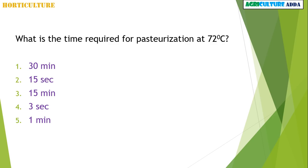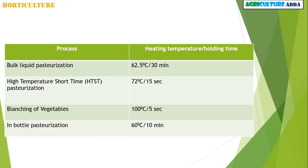What is the time required for pasteurization at 72 degrees Celsius — 30 minutes, 15 seconds, 15 minutes, 3 seconds, or 1 minute? These are the processes and heating temperature per holding time required in pasteurization.